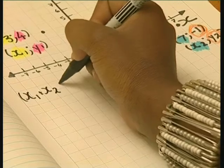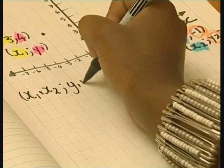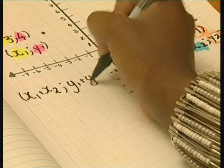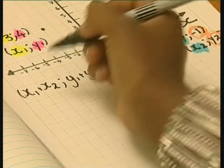Now I write down the formula. The coordinates of the midpoint are x1 plus x2 all divided by two, y1 plus y2 all divided by two.